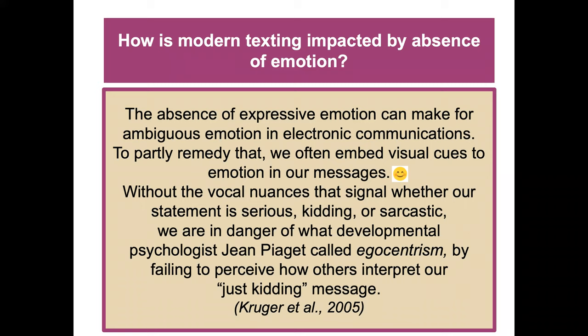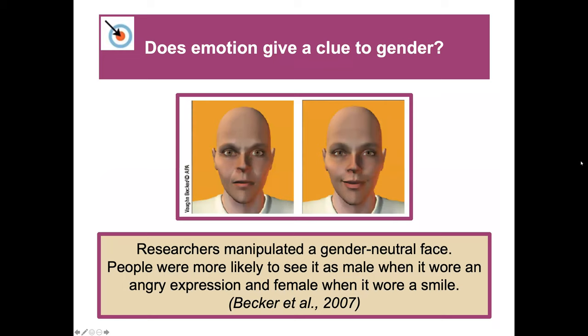Does emotion give a clue to gender? Researchers manipulated a gender-neutral face. People were more likely to see it as male when it wore an angry expression and female when it wore a smile. You can look at those images and see if you would interpret one face as male versus female.